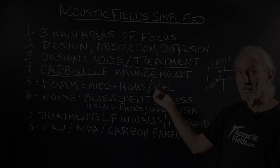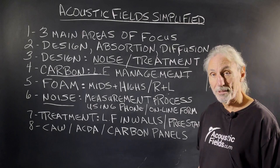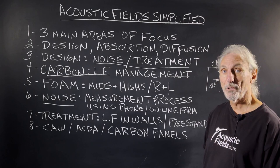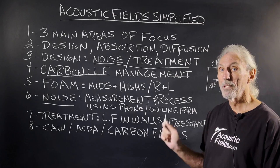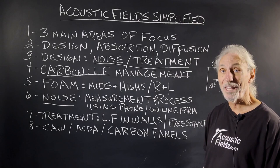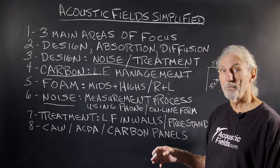Noise seems to be a real confusing issue for most — everybody guesses, and everybody guesses wrong. The problem is you build something that's wrong, call me, and I may not be able to fix it; we may have to tear it out and start over. Follow the carpenter adage: measure twice, cut once. Measure your noise. We have a process where you use your phone, fill out data on an online form, and send it in. We've done over a thousand of these — it's an accurate process. They either build it themselves after the numbers come in and we send them the drawing for the barrier, or they have contractors do it.